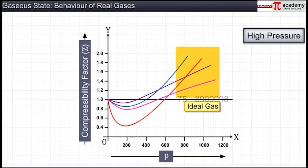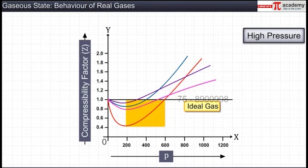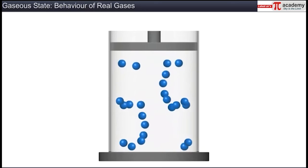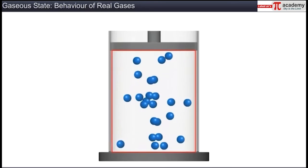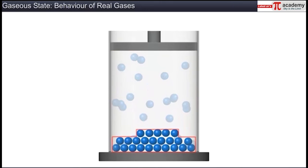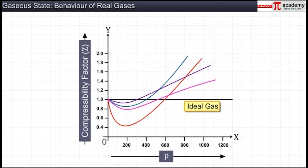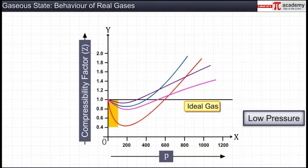At high pressure, all gases have a compressibility value greater than 1, meaning they are very difficult to compress. At intermediate pressure, most gases have a compressibility value less than 1, meaning they are easily compressible. Thus, real gases show ideal behavior when the volume occupied by them is so large that the volume of the molecules can be neglected. Hence, the behavior of a gas becomes more ideal when the pressure is very low, and this low pressure magnitude varies for each gas depending on its nature and temperature.